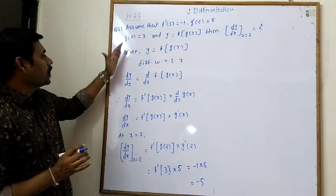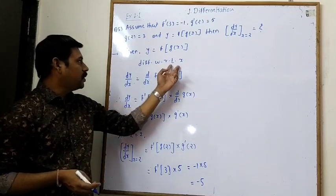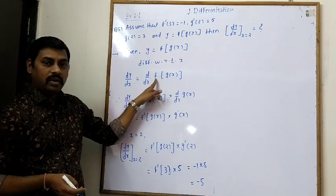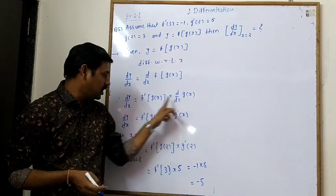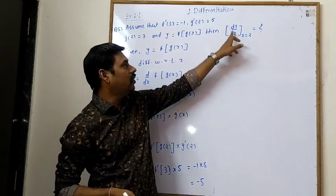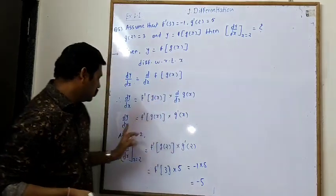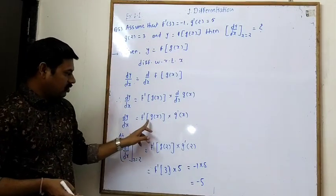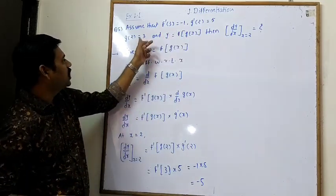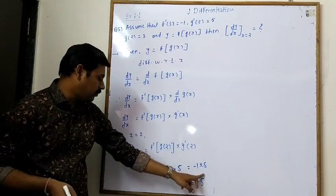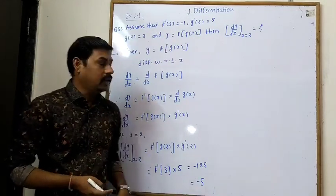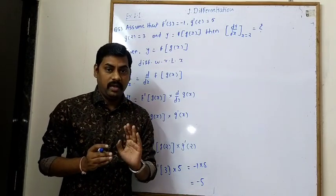This is the final answer: dy/dx at x = 2 is −5. Summary: y = f(g(x)), differentiated gives dy/dx = f'(g(x)) · g'(x). Substituting x = 2 with g(2) = 3 and g'(2) = 5, and f'(3) = −1 gives −1 · 5 = −5.